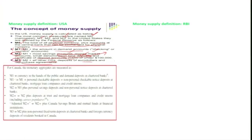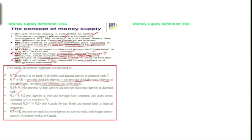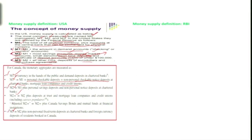For Canada, the money definition is: M1 — currency in the hands of the public and demand deposits in chartered banks; then M1 plus personal checkable deposits, non-personal checkable/notice deposits at chartered banks, mortgage loan companies, and credit unions; followed by M2, M2 plus, and M3 definitions. Canada broadly also has M1, M2, and M3 definitions.